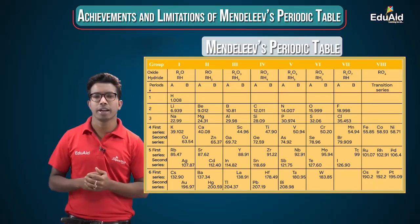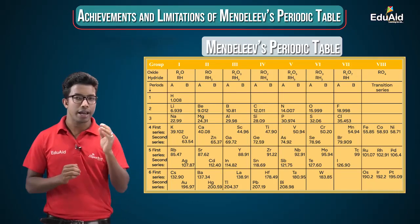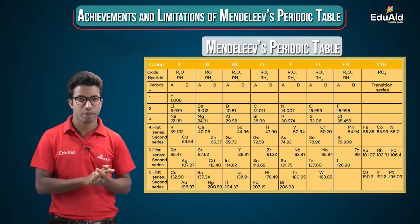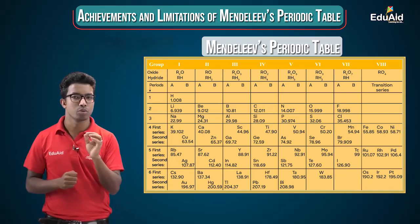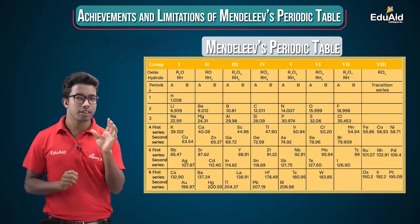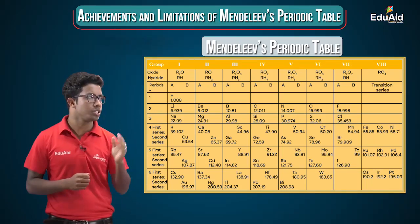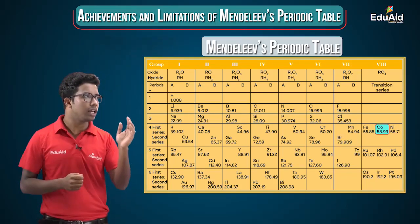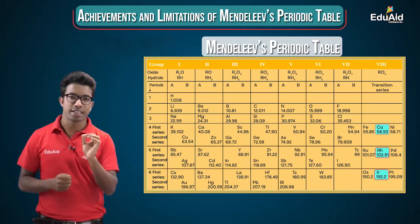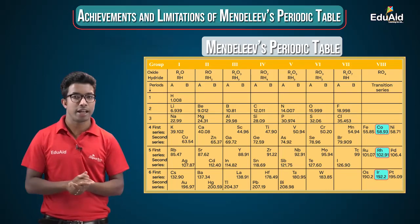The reason is that when Mendeleev was preparing this table, he was thinking about two trends: atomic mass and properties. Elements having similar properties should be placed in the same group. In the case of cobalt, the elements directly below it — rhodium and iridium — have similar properties to cobalt, so they should be in the same group.